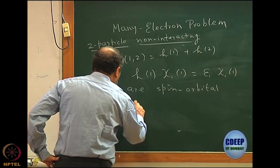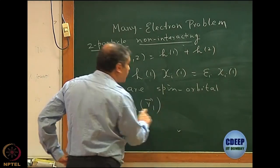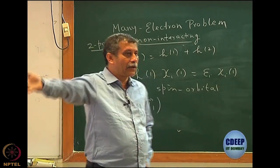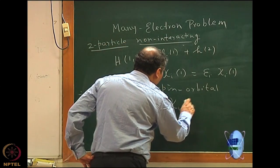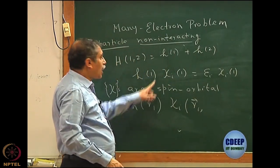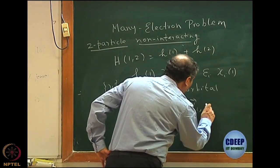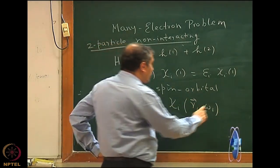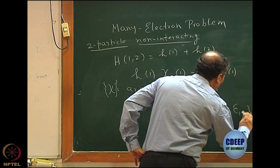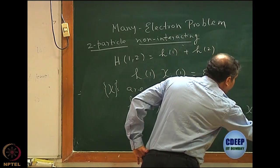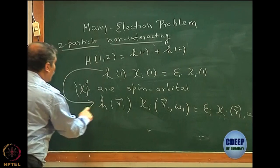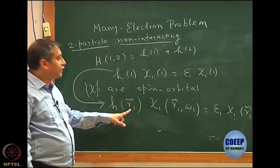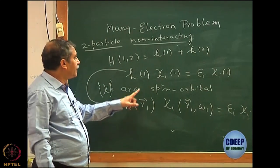Let me write it very specifically. H again depends only on R1 — three-dimensional R1, which can be R1, theta1, phi1 or X1, Y1, Z1, whatever coordinate system. However, chi now depends on R1 of course, but also on the spin coordinates. The spin coordinates are R and omega. So this will be: energy times chi_i of R1, omega1. This is the long form of the equation. When writing the short form, electron 1 refers to all coordinates of electron 1 — space only or including spin.